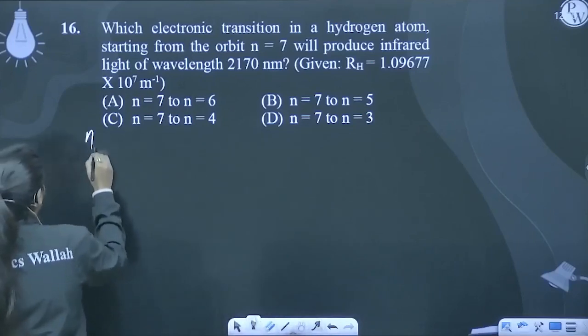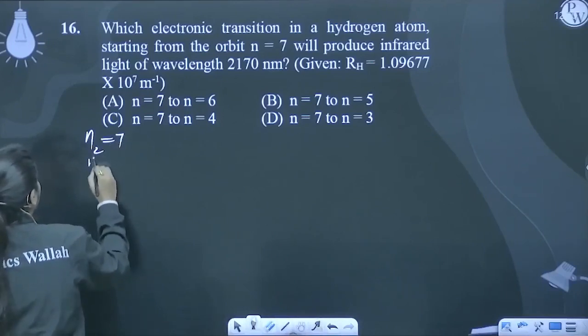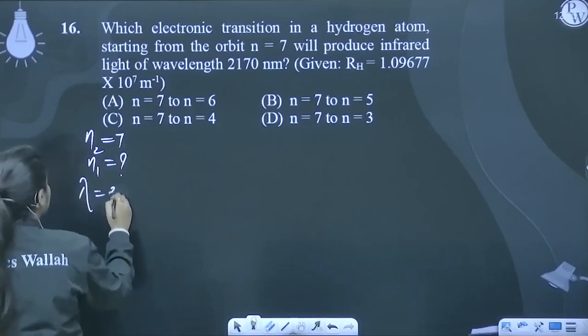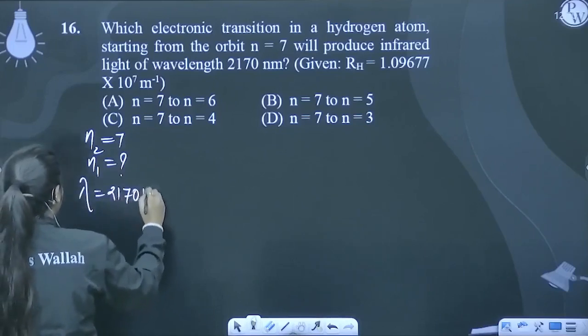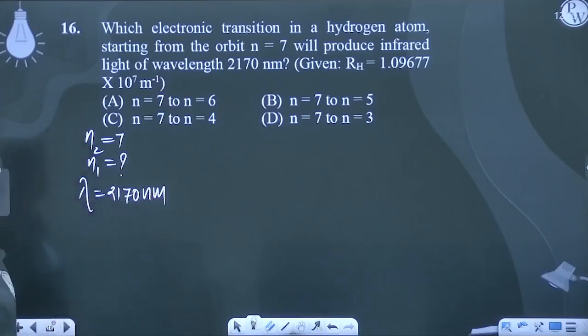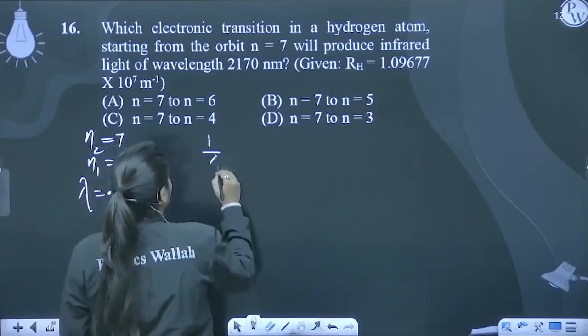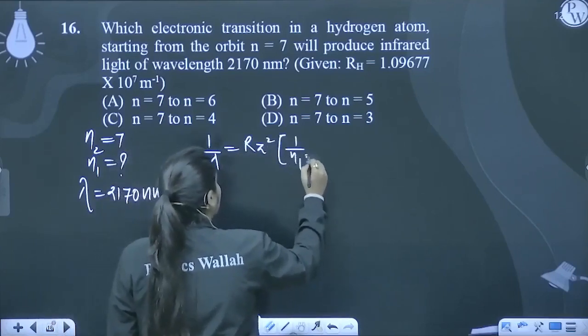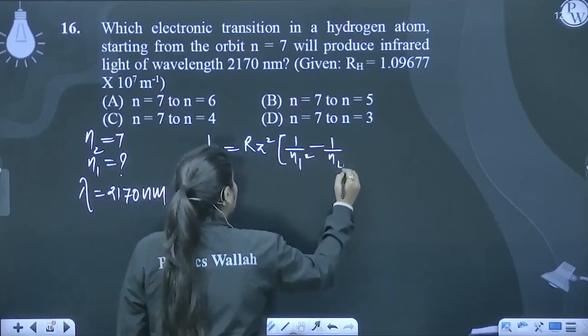We have to calculate n1. And this transition has the corresponding wavelength that is 2170 nanometer, right? So, using the Rydberg formula: 1 by lambda equals R times Z square, 1 upon n1 square minus 1 upon n2 square.